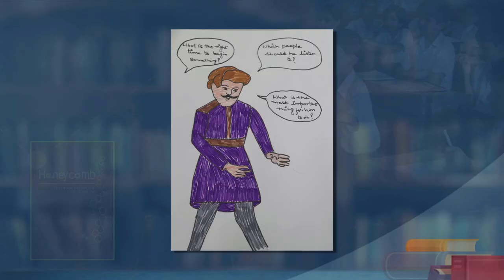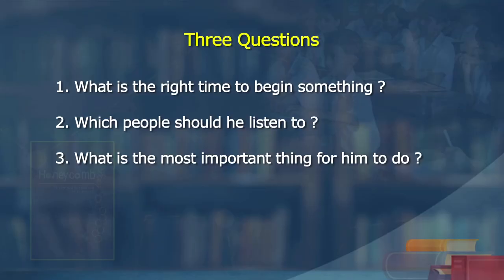Here is a king. He also has some introspection, reflection — he thinks a lot. So he asked three questions. Here are the three questions, learners, on the screen. What is the right time to begin something? Which people should the king listen to? What is the most important thing for the king to do?